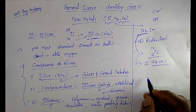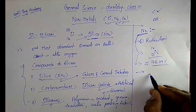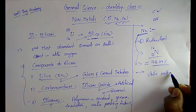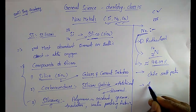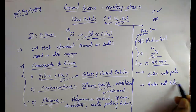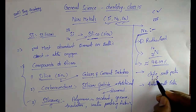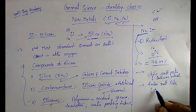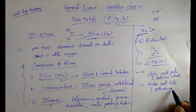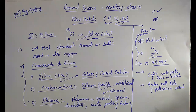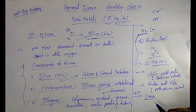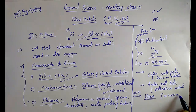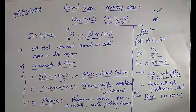In the earth's crust, nitrogen occurs as Chile saltpeter, that is sodium nitrate, or Indian saltpeter, that is potassium nitrate. Nitrogen is the main component of urea — urea contains nearly 46 percent of nitrogen.